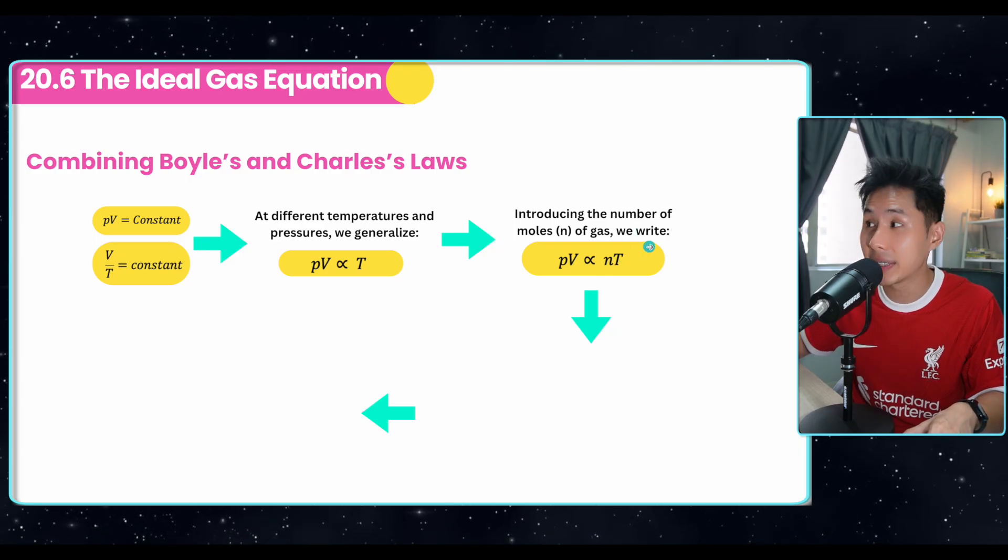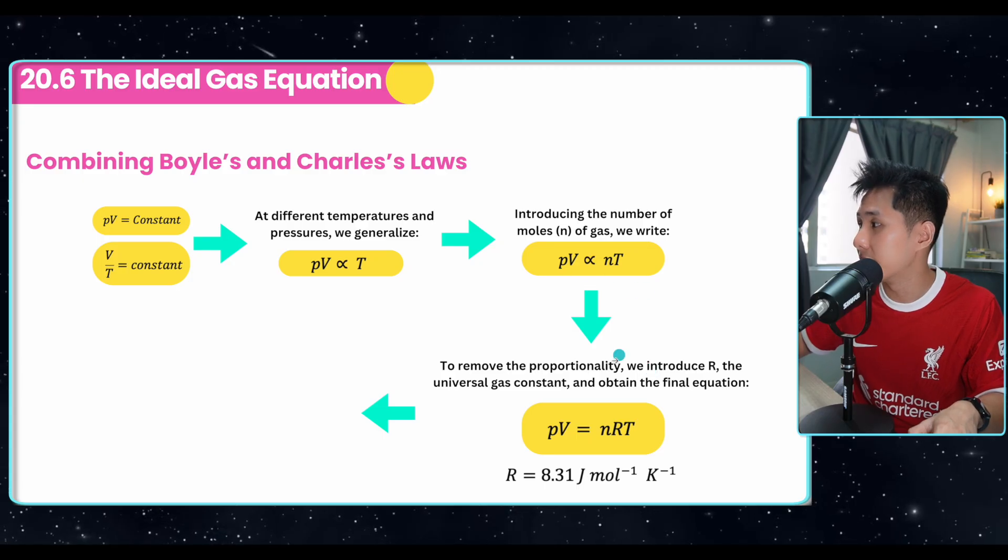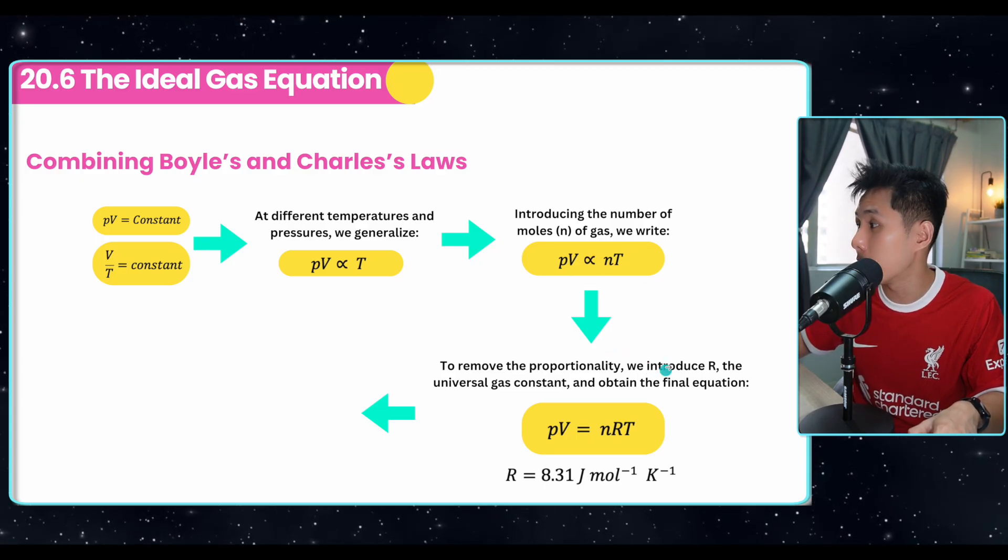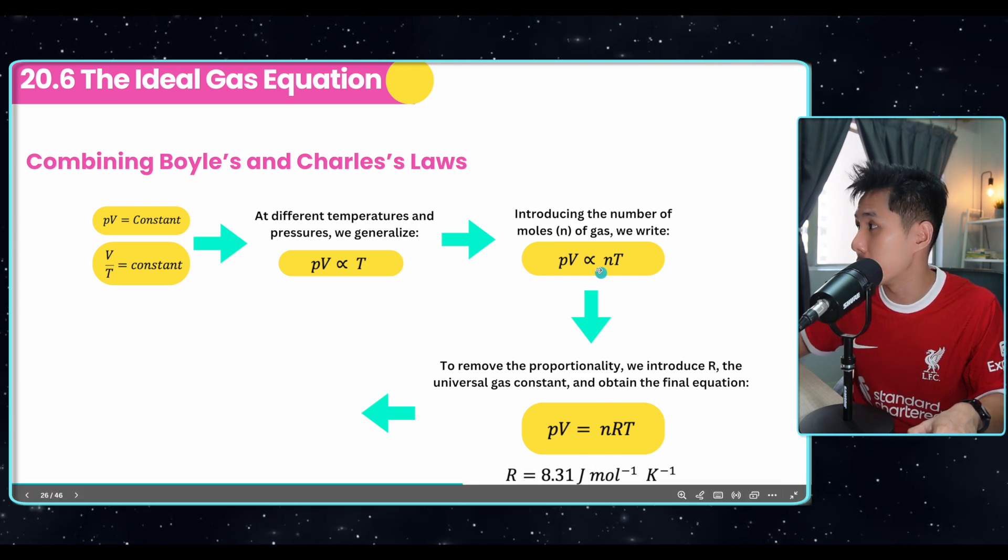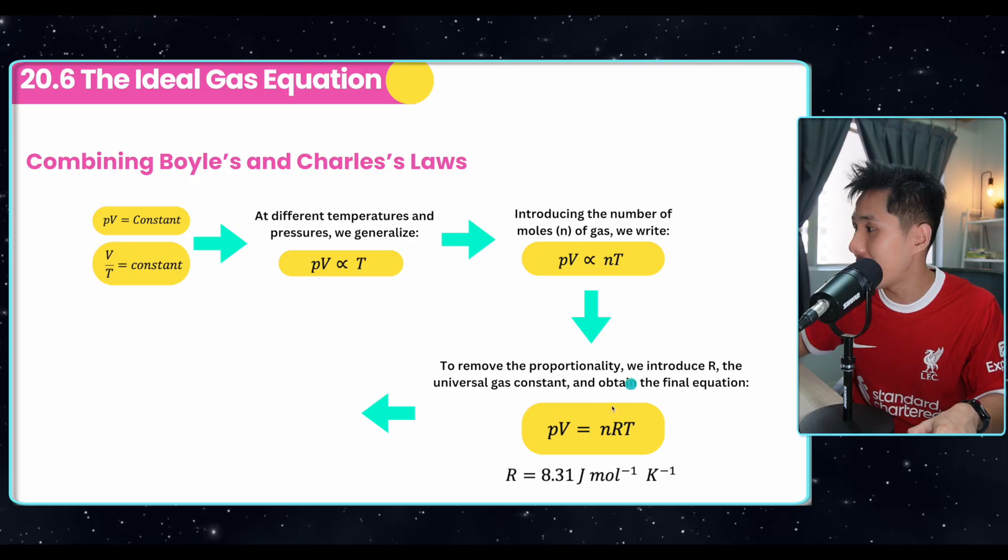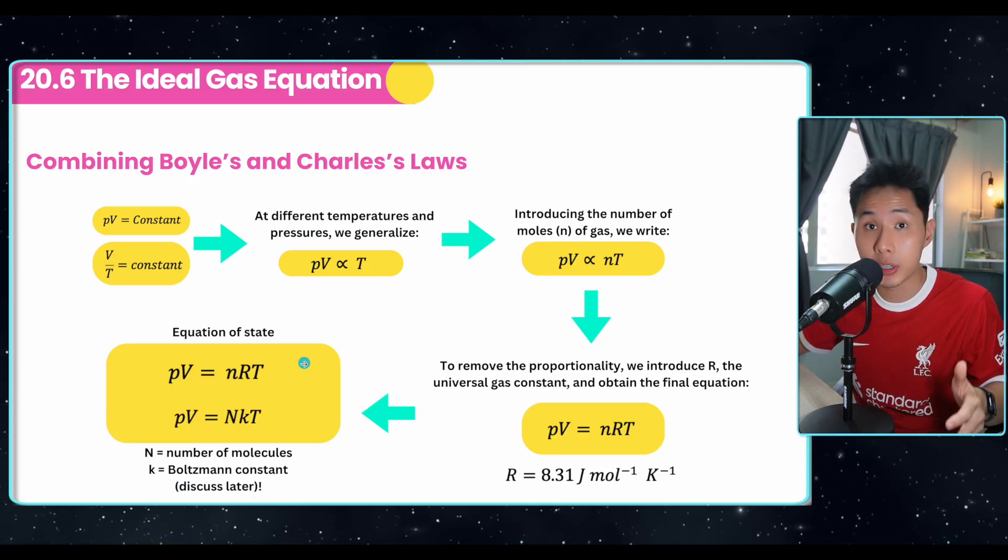So now we can combine these two equations, we can generalize as PV is directly proportional to temperature, because temperature here is directly proportional to volume, and pressure is inversely proportional to volume. And after that, we can introduce the number of moles of gas. At this point, we can just multiply by n. And in order to remove the proportionality, we introduce another constant called R, the universal gas constant, which has a constant value here, and then we remove the proportionality. And that's when we have PV equal to nRT. And this is what we call the equation of state.